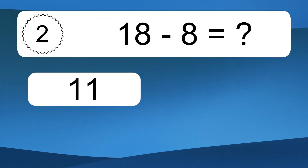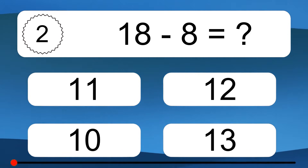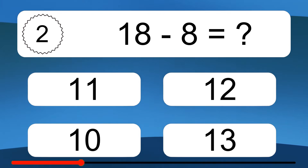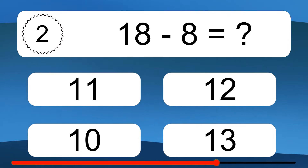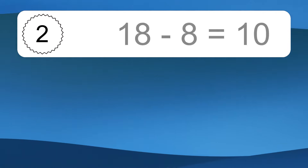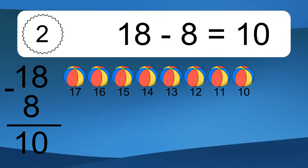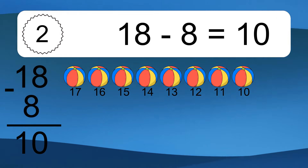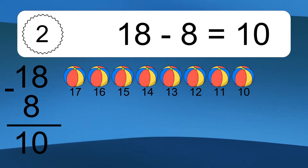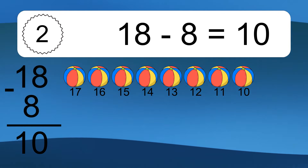18 minus 8 equals what? 18 minus 8 equals 10. Let's count it: 17, 16, 15, 14, 13, 12, 11, 10.